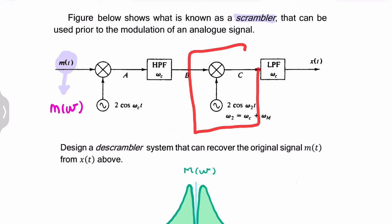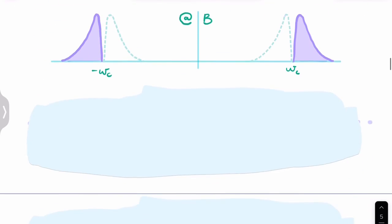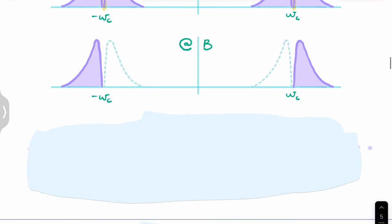Then we have another modulator with another high-frequency carrier. This time it's at a frequency of ωc plus ωₘ, the message frequency, and then a low-pass filter. This message is going to be shifted up by ωc plus ωₘ. This is ωc and this is ωₘ.